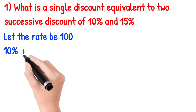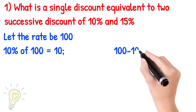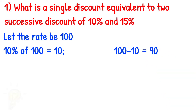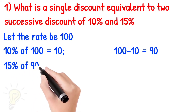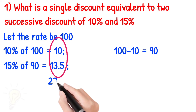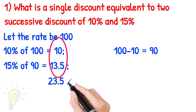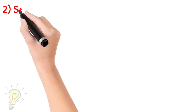We apply the first discount, getting a value of 90, then the second discount giving us 85. When we combine these, we get a value of 23.5. So applying 100 rupees as the base, the equivalent single discount is 23.5%. That is the answer to the first question.